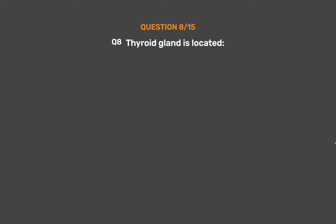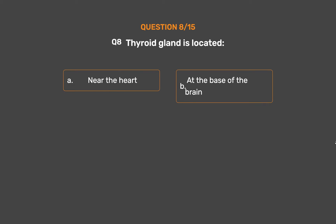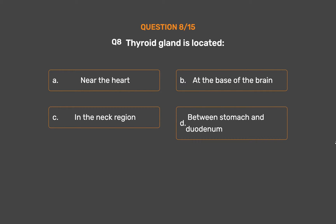Question No. 8. Thyroid gland is located: Option A - Near the heart. Option B - At the base of the brain. Option C - In the neck region. Option D - Between stomach and duodenum.